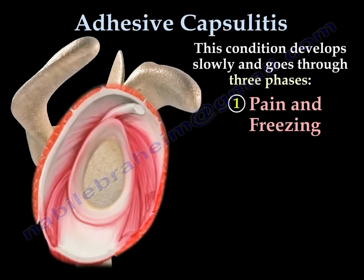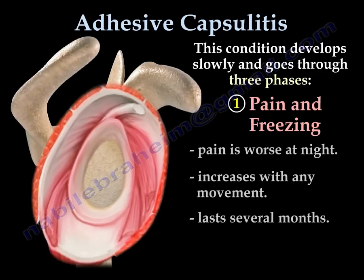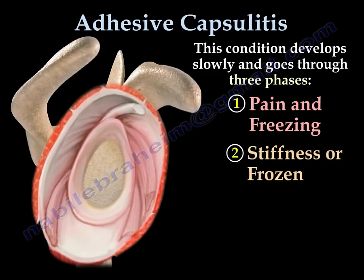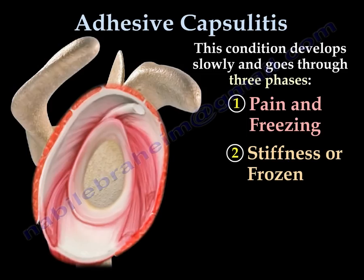The first phase is pain and freezing. The pain is worse at night, increases with any movement, and will last several months. The second phase is stiffness, or frozen. The range of motion is limited as the pain is diminishing, and it may last up to one year.